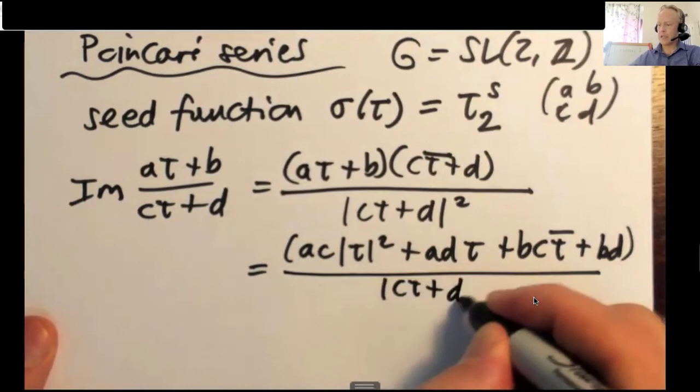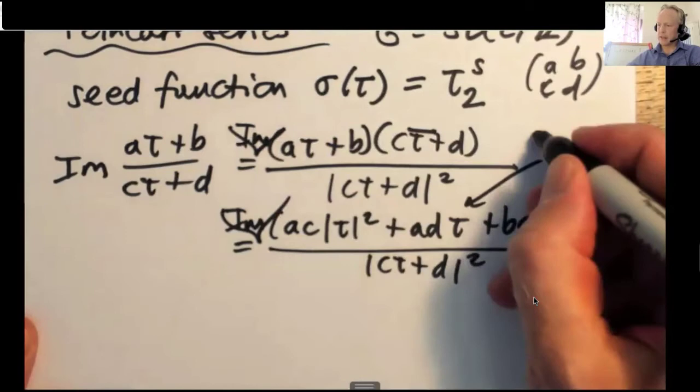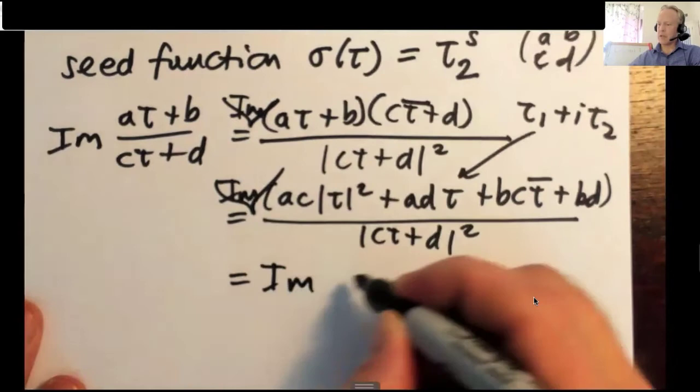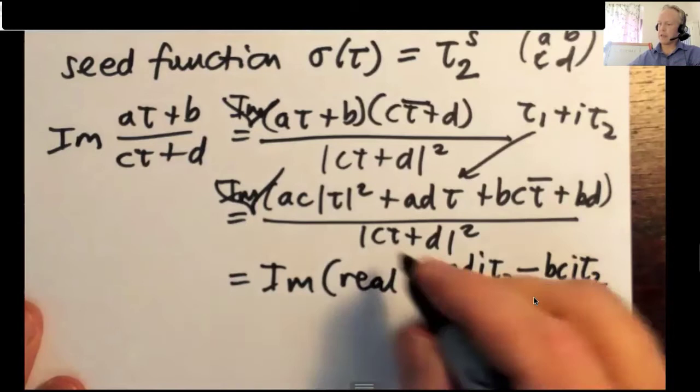So you get AC tau squared plus AD tau plus BC tau bar plus BD and then divide by C tau plus D squared. I forgot to write the imaginary part. These two pieces will not contribute. So you come from here. So if we plug in that tau is tau one plus i tau two for the real imaginary parts, I guess the imaginary part of something real plus AD i tau two minus BC i tau two divided by this thing there.